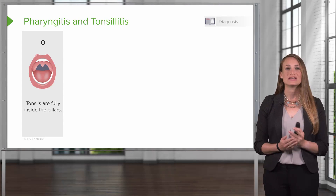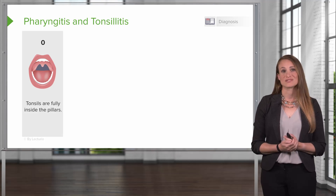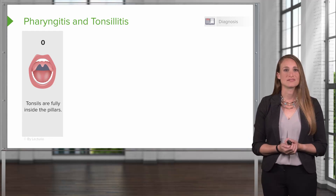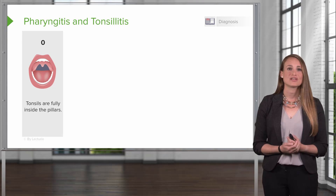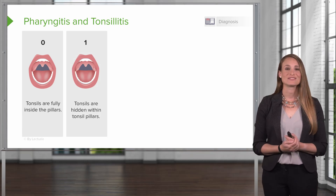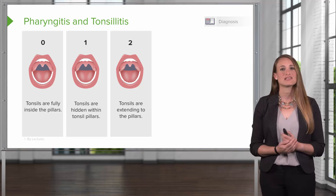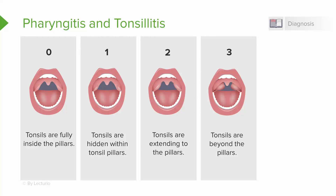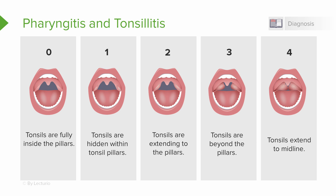So how do we diagnose this? We need to have a way to describe tonsillar size — we can't just say small, medium, or large, so there's a grading system. Grade 0 tonsils are fully inside the tonsillar pillars. Grade 1 tonsils are hidden within the tonsillar pillars. Grade 2 is pretty typical, extending to the pillars. Grade 3 tonsils extend beyond the pillars. Grade 4 is a problem — this is where the tonsils extend to midline, sometimes impinging on the uvula, and sometimes these are referred to as kissing tonsils.